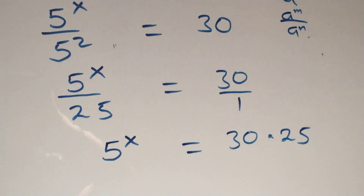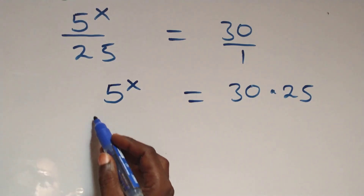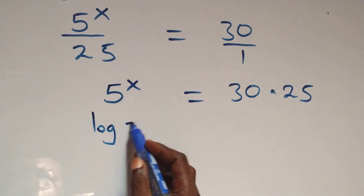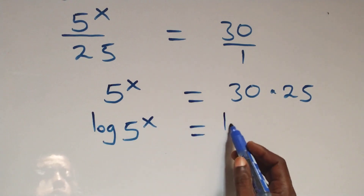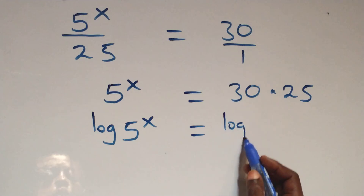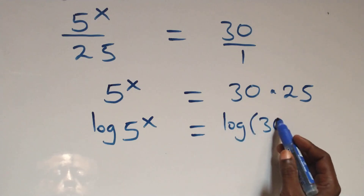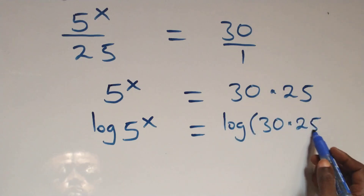Then, the next step here, we take the log on both sides. At this here, we have log 5 raised to power x equals to log of 30 times 25 here.